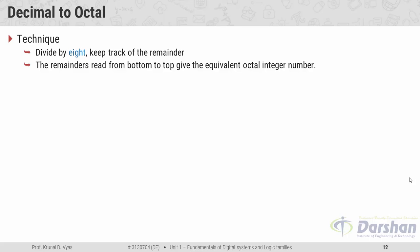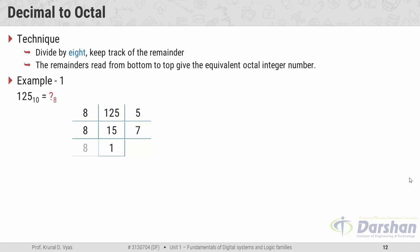The remainders are read from bottom to top. Let us take one example: 125 in decimal is equivalent to which number in octal? We divide 125 by 8 until the quotient is 0, and we are left with remainders 5, 7, and 1. Reading the remainders from bottom to top gives the octal number: 125 in decimal is equivalent to 175 in octal.